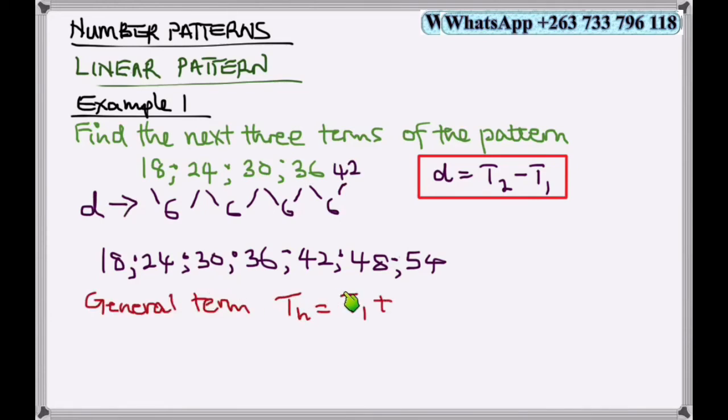The general term for this, using the formula Tn = T1 + (N-1)d: Tn = 18 + (N-1)6, where T1 is 18 and d is 6. This is the general formula of the sequence.